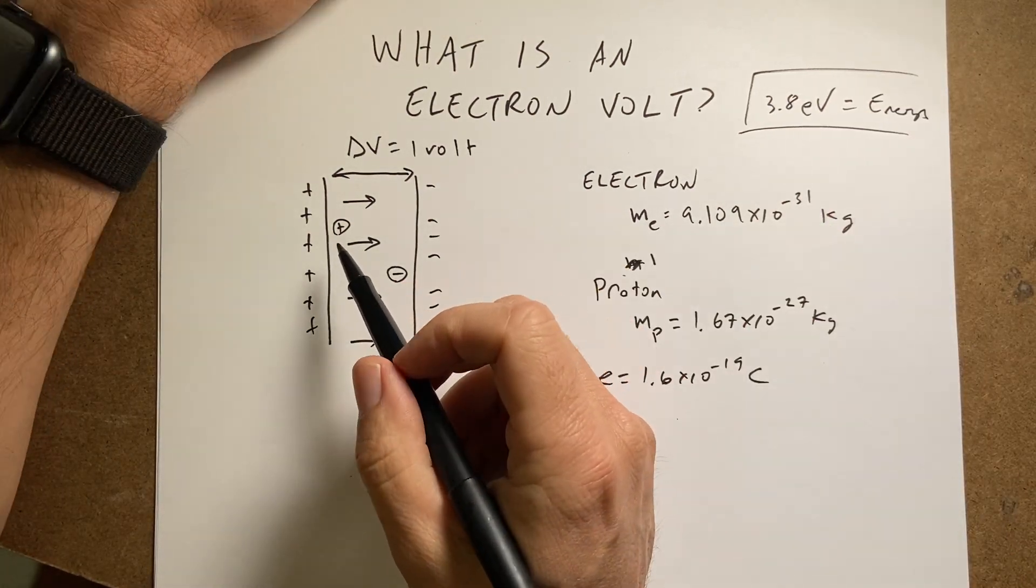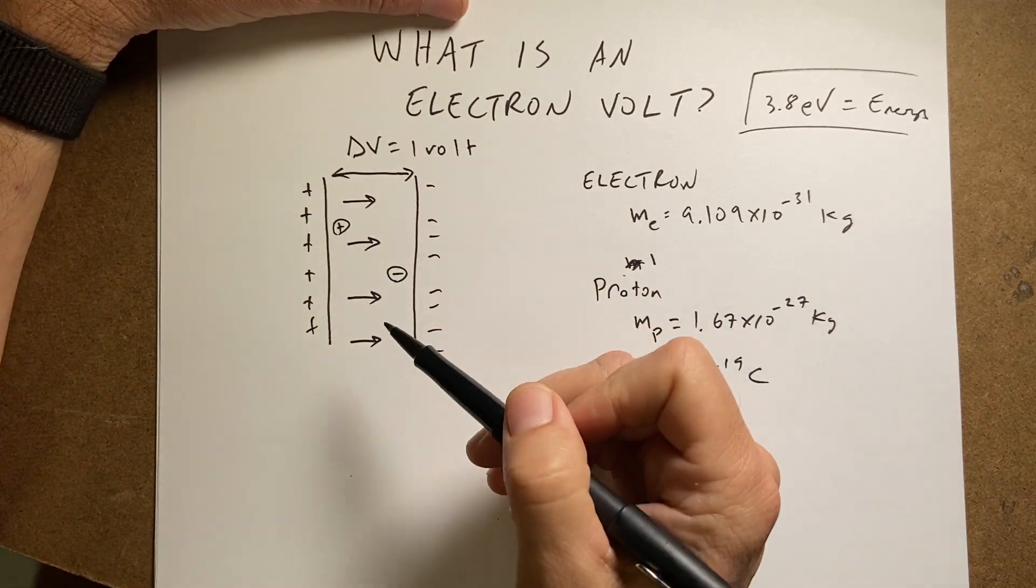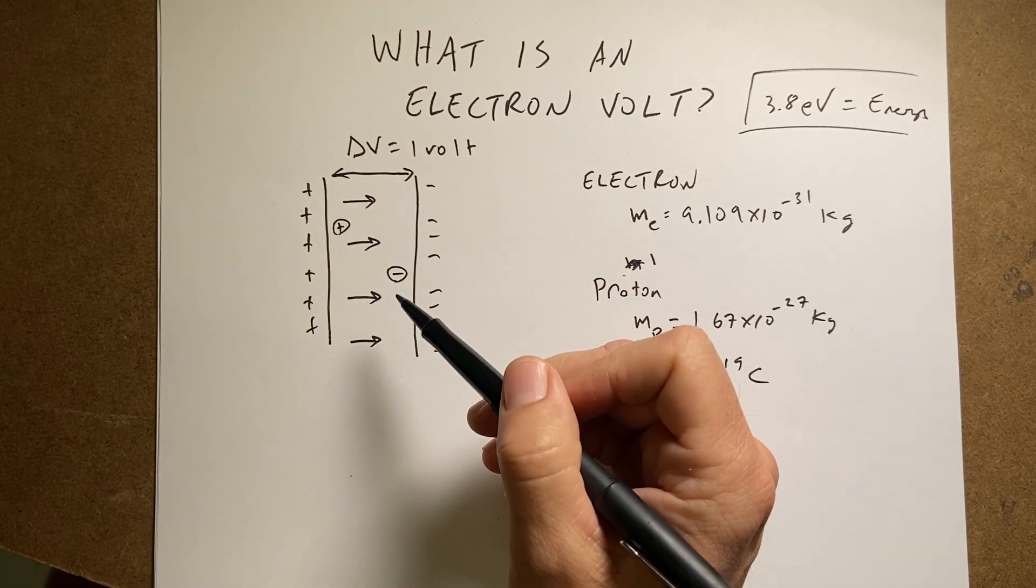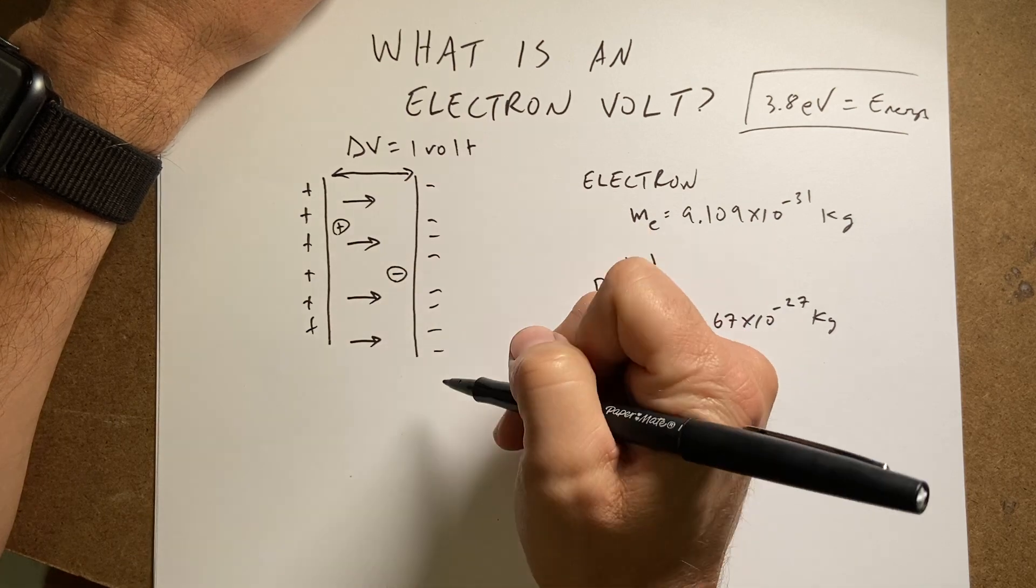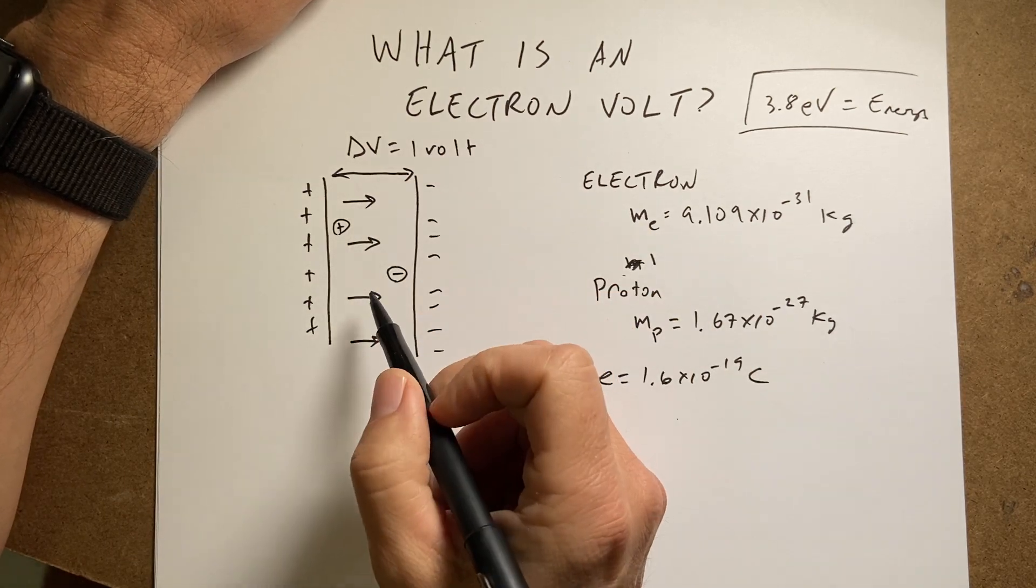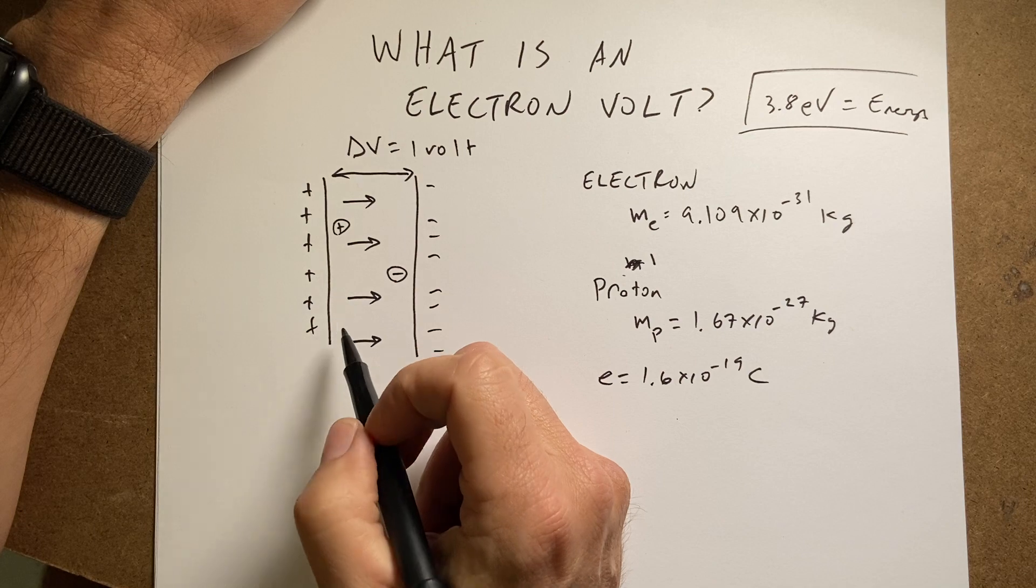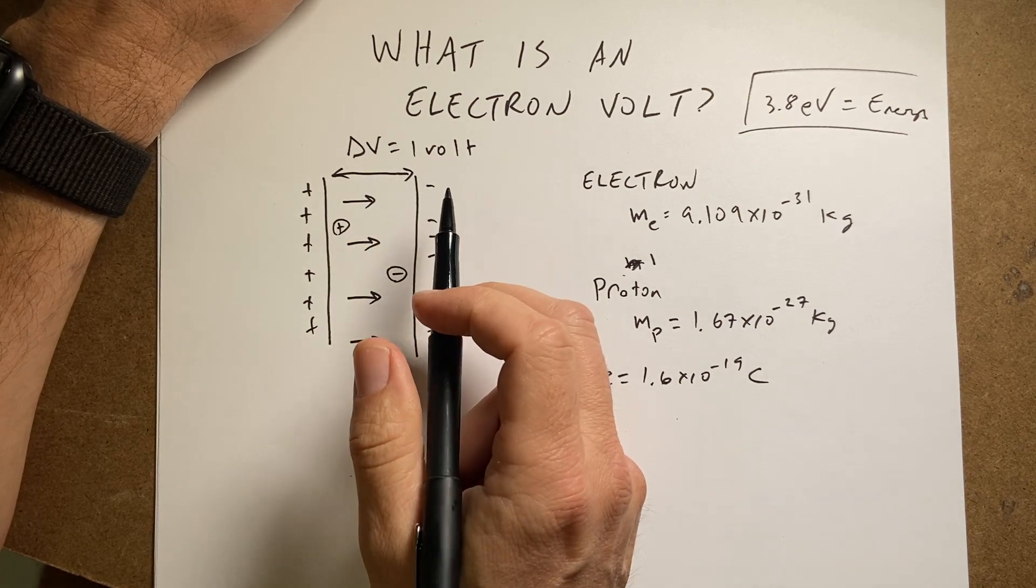Suppose I have this situation over here. I have parallel plates, they don't have to be parallel plates, but that's what I have, and I have positive charge and negative charge. It makes a constant electric field. The change in potential across these parallel plates is one volt exactly.